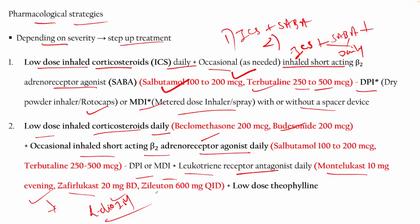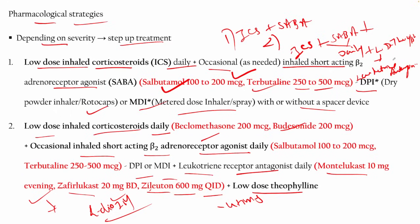Additionally, acebrophylline 600 mcg QID (four times a day) plus low-dose theophylline can be used. So step 2 adds leukotriene receptor antagonists and theophylline to the step 1 regimen of ICS and SABA.